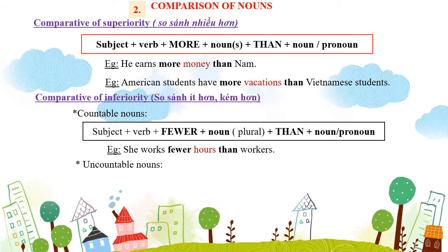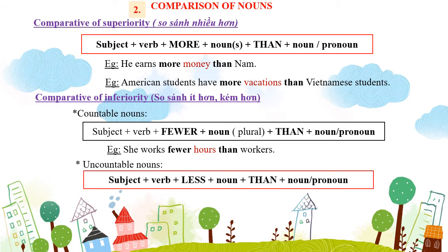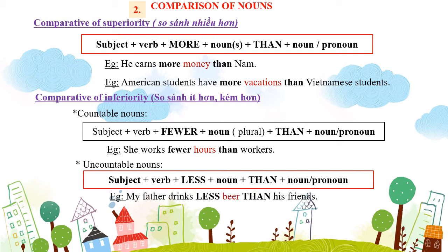Đối với uncountable noun (danh từ không đếm được): S + verb + less + noun + than + noun/pronoun. Ví dụ: "My father drinks less wine than his friends." – Cha của tôi uống ít rượu hơn bạn của ông ấy. Ở đây đứng sau "less" là uncountable noun. Vậy: fewer đi với danh từ đếm được ở số nhiều, còn less đi với danh từ không đếm được.